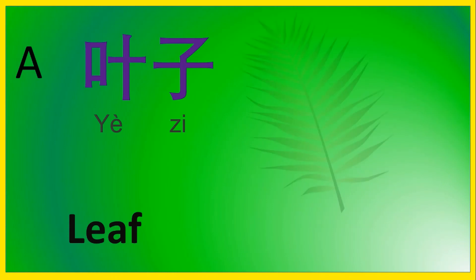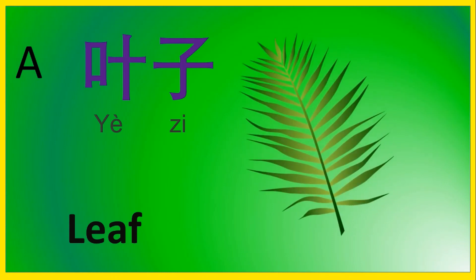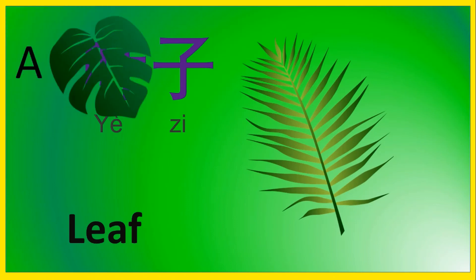A is 叶子, leaf. 叶子, leaf. 绿色的叶子, green leaves. 叶子.